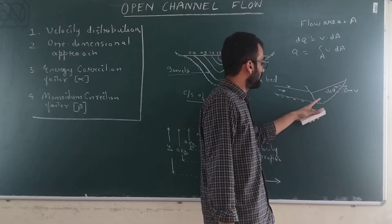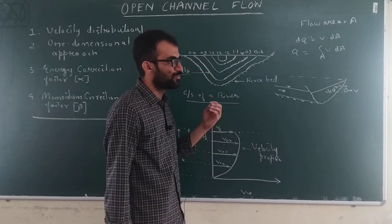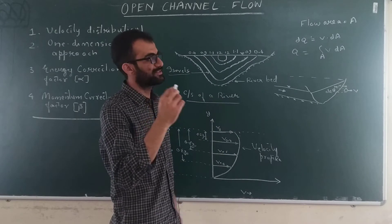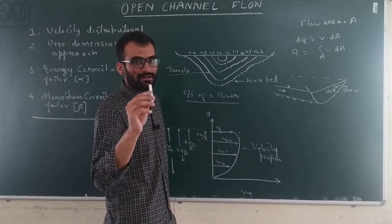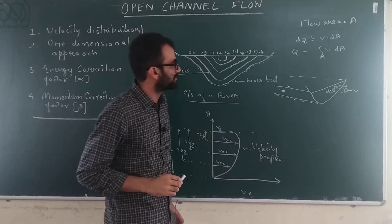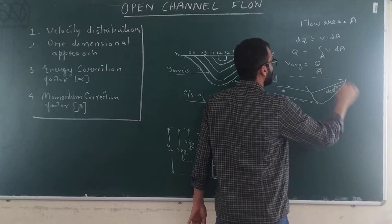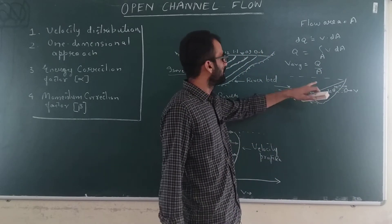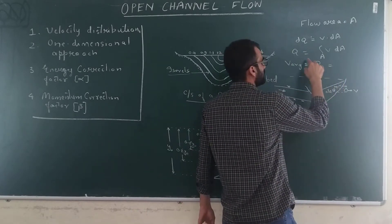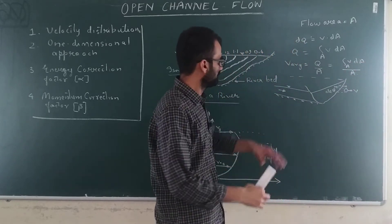For analysis purposes, we generally use one single value of velocity called the average velocity to represent the entire cross-section. Average velocity V̄ = Q/A, which is the integral of v·dA over area A, divided by A.